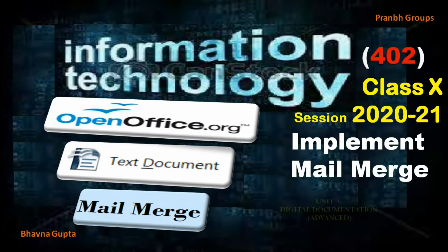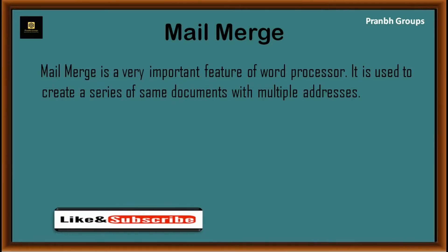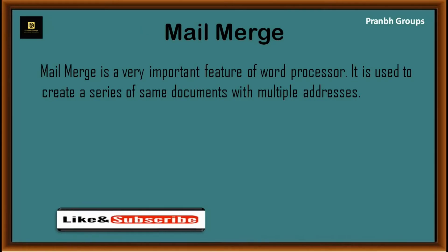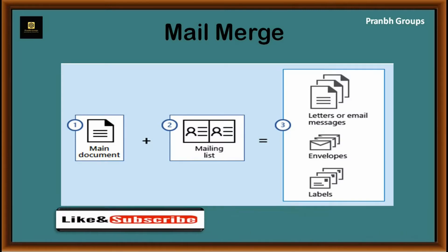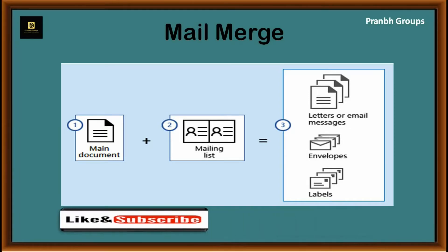Today I explain the last topic: Implement Mail Merge. Mail merge is a very important feature of a word processor. It is used to create a series of same documents with multiple addresses. Mail merge is a process of merging the main document with the mailing addresses of various persons. It is used to send invitations, letters, or to print certificates for several people. For example, if your principal or class teacher wants to send a letter or notice to parents regarding any meeting or function.